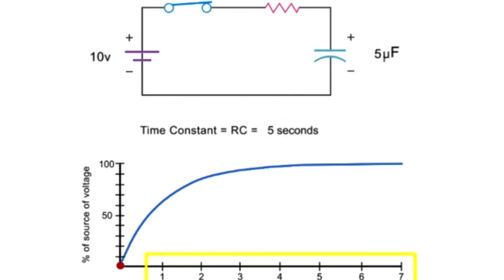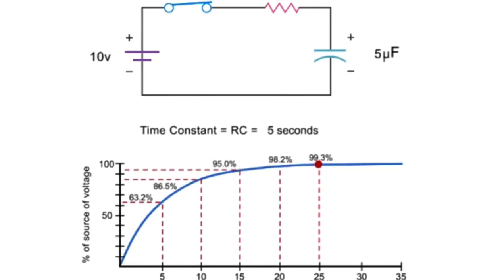Therefore, for each 5 seconds of elapsed time, the capacitor will achieve its corresponding voltage percentage until it reaches an effective charge after five time constants.